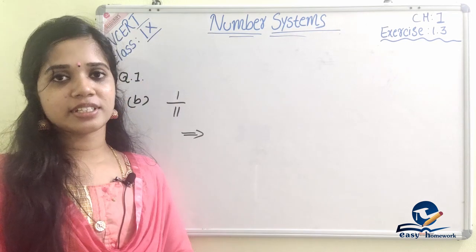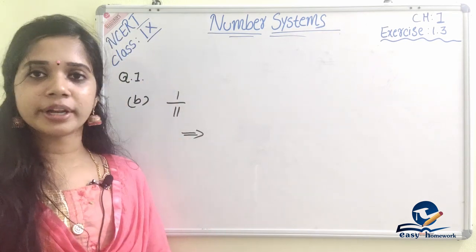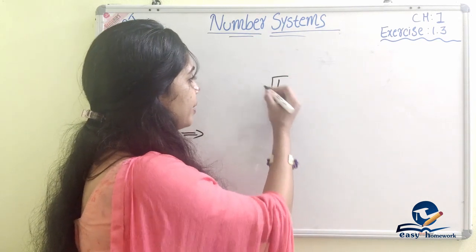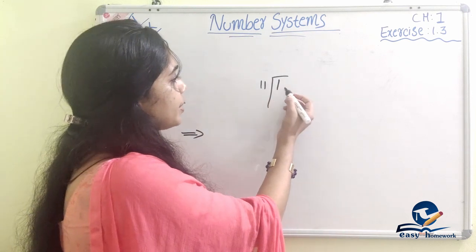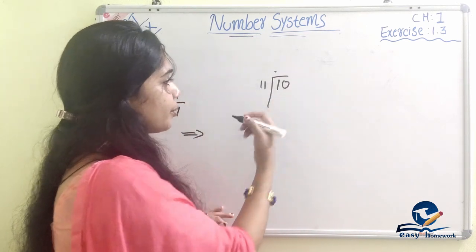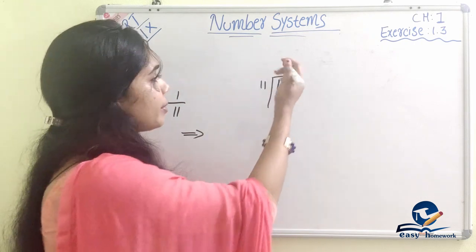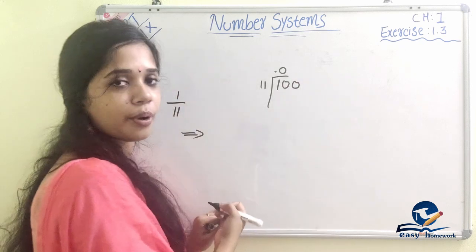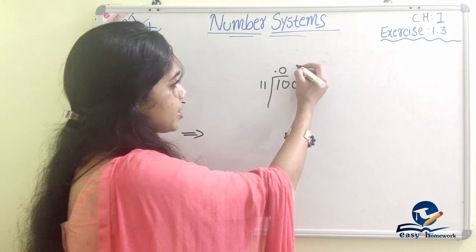Second question: the decimal form of 1 by 11. 1 divided by 11 — 11 is bigger, so we get 0. Then 10, 11 still doesn't go, so again 0. Then taking 100, 11 goes 9 times.